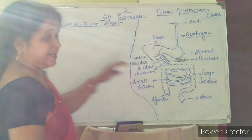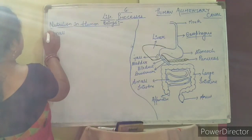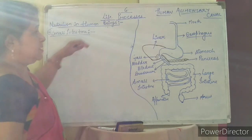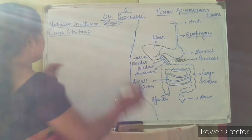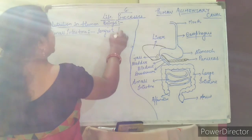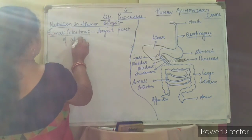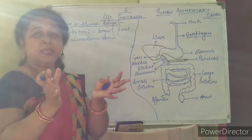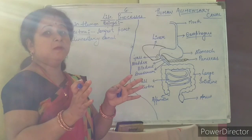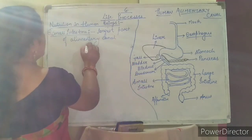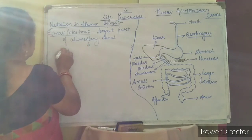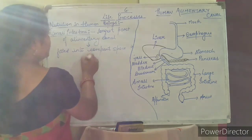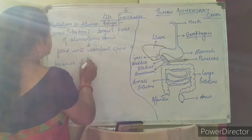After digestion in the stomach, the food enters the small intestine. The small intestine is the longest part of the alimentary canal, fitted into a compact space because of extensive coiling. Although it is the longest part, it is called 'small' intestine because it remains in a compact, coiled form.